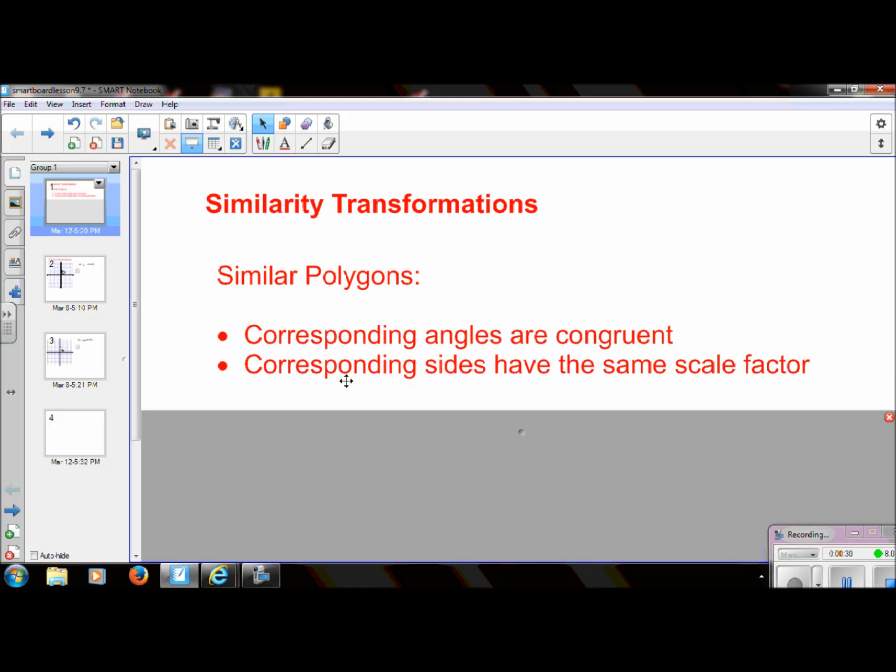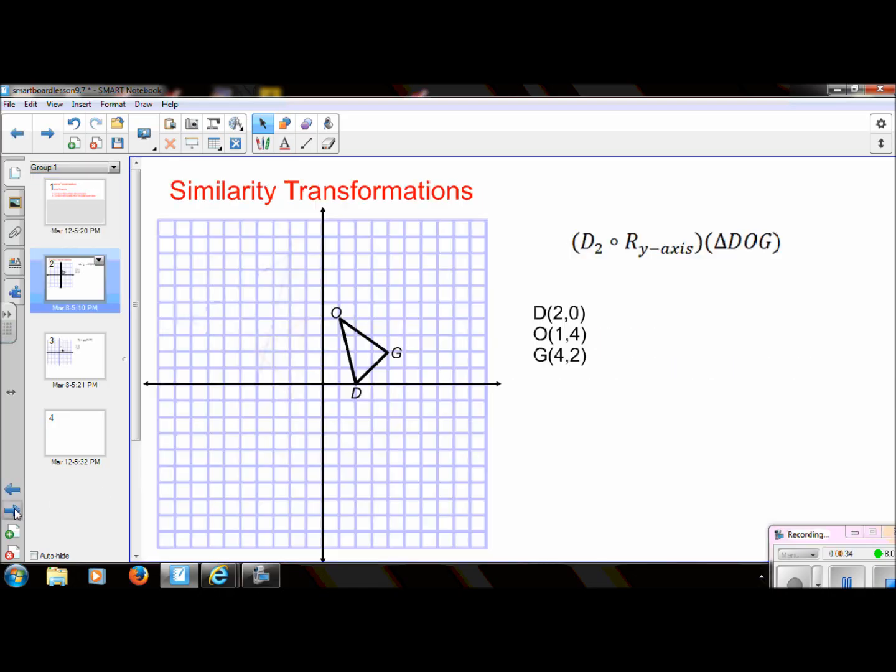So again, just take note of that, and it's something good to know for the final as well. So in our similarity transformations, we're not doing anything new, it's just that we're taking note that our final image is going to be similar to what we started with. So we're going to apply this transformation right here, and we always have some type of dilation included when we do a similarity transformation.